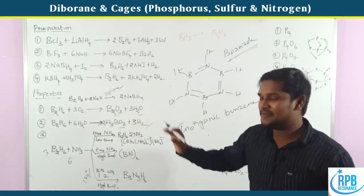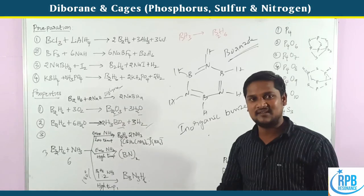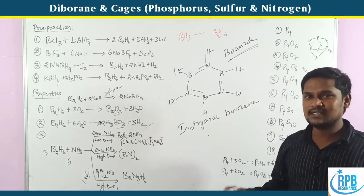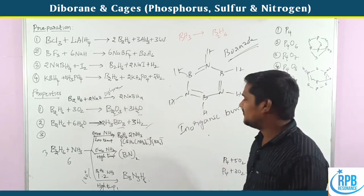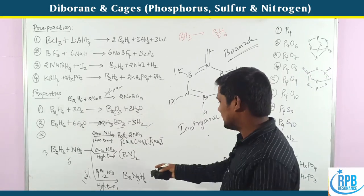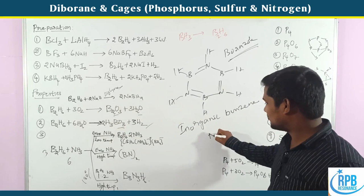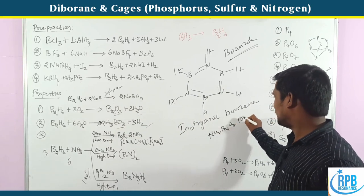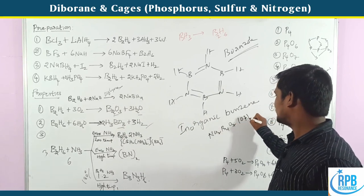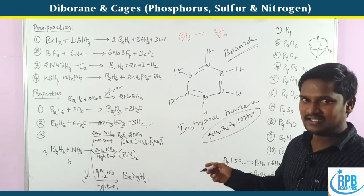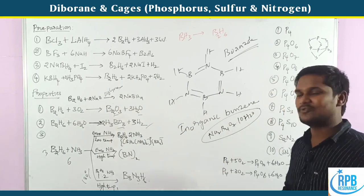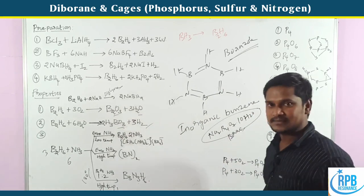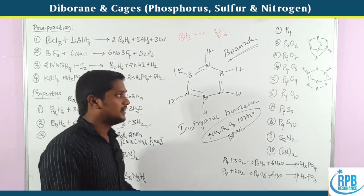These are the preparation methods and chemical properties of diborane as well as borazine. Some boron hydride values to note: B2, B4, B10 quarter molecules — this is about boron composition and finding the shape/structure of boron hydrides.